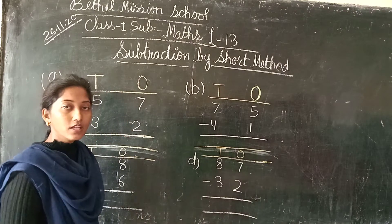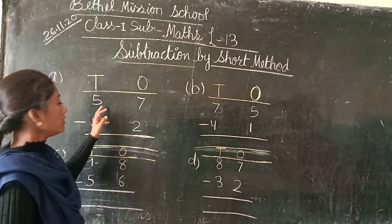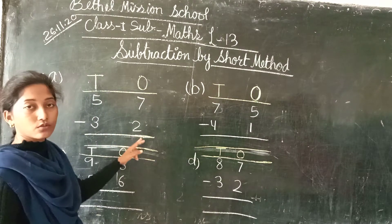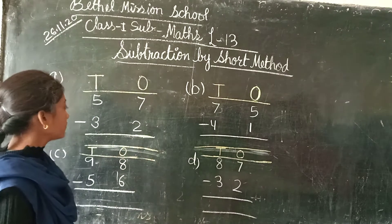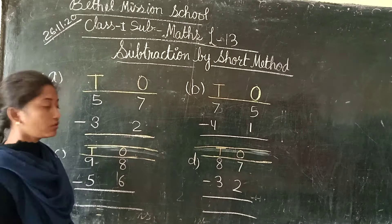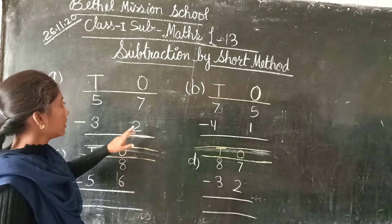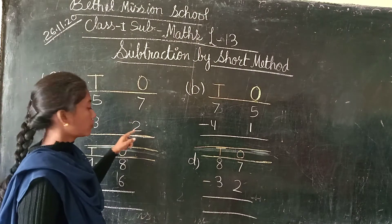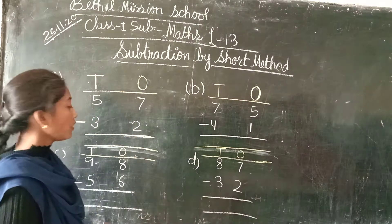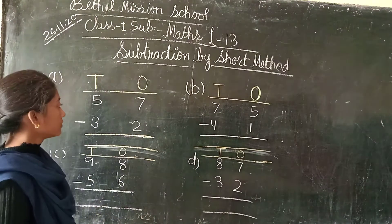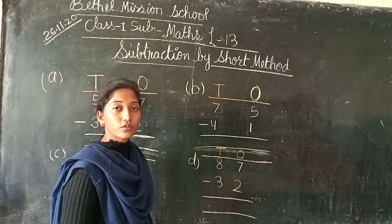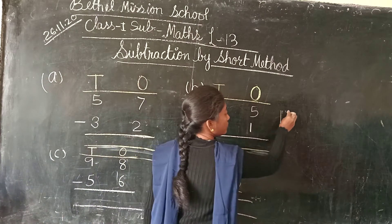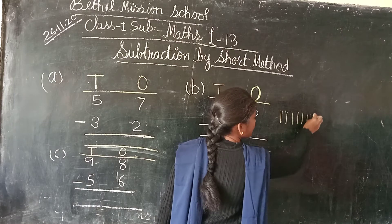We will see one by one. First we will see the number 57 minus 32. So first we have to draw 7 parts and we have to minus 2. We will draw 7 lines: 1, 2, 3, 4, 5, 6, 7.